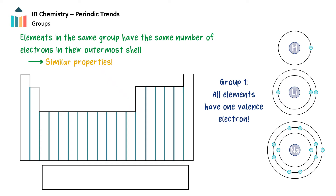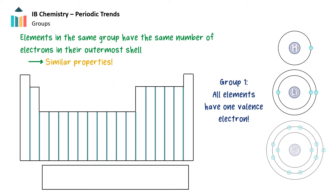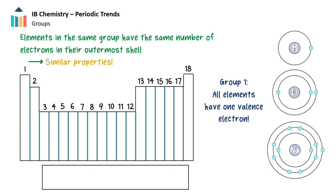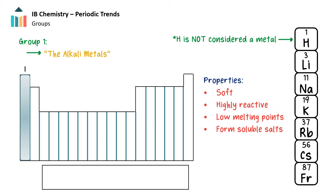Elements in the same group have the same number of electrons in their outermost shell, and therefore have similar chemical and physical properties. Groups are numbered from left to right, and the group number indicates the number of outer shell electrons, ranging from 1 to 18. Group 1 elements are the alkali metals, which all have one valence electron. They are soft, highly reactive, have low melting points, and form soluble salts.